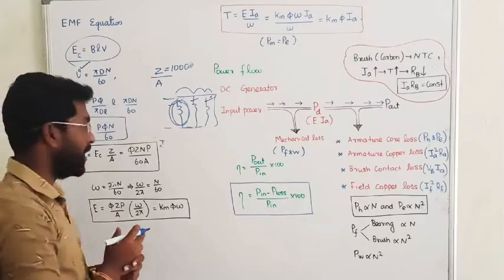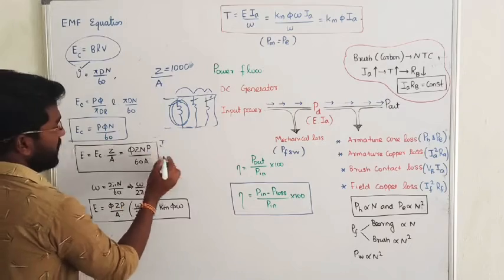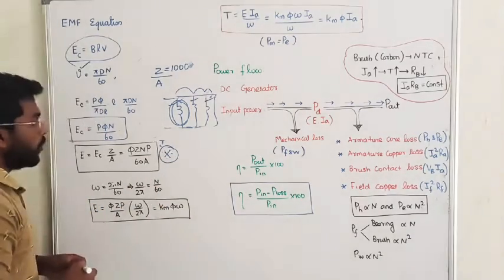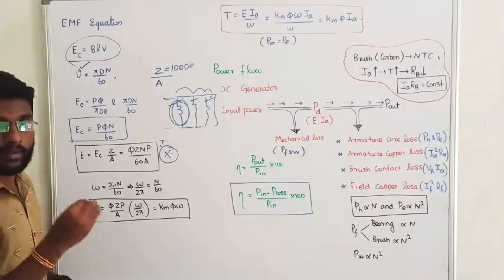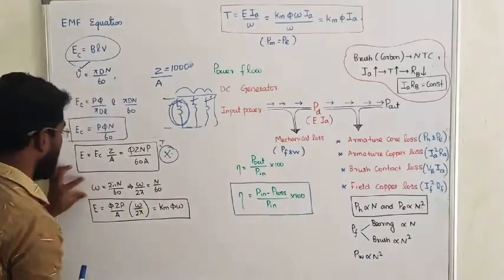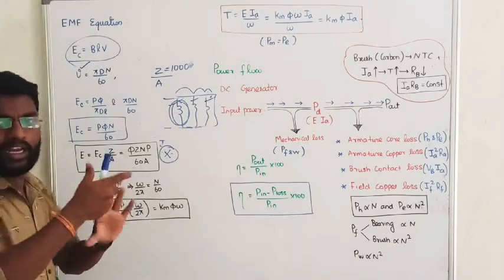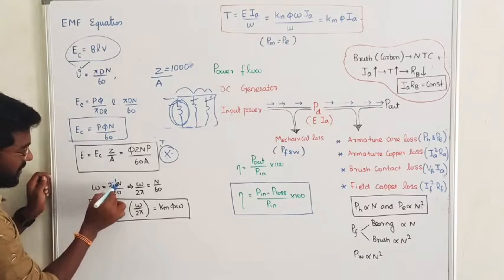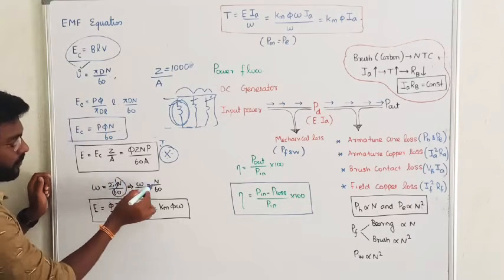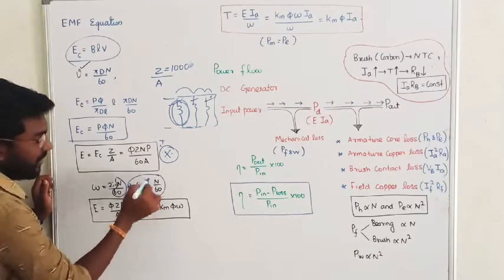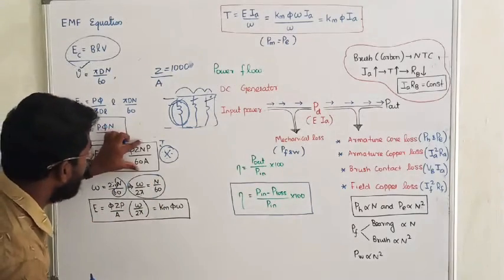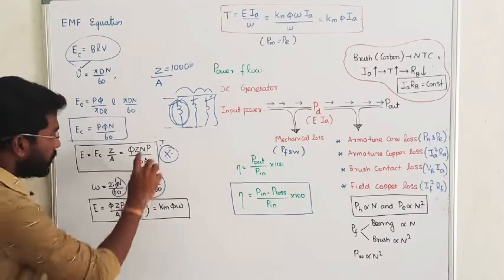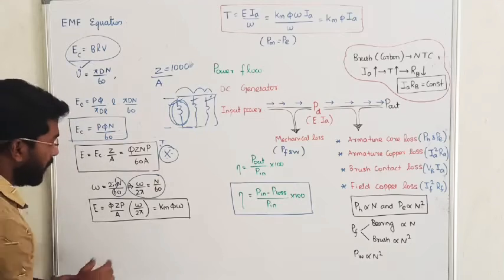This gives the very important formula: E = φZNP / (60A). Now introducing one more term — the mechanically rotating speed of the DC machine can be written as ω = 2πN/60 (mechanical angular speed). From this, N/60 can be replaced by ω/(2π). Substituting N/60 with ω/(2π) in the equation: